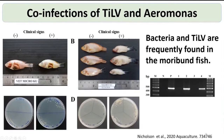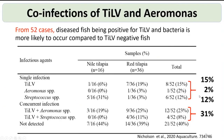From different farms, sick fish looked very pale, stopped eating, appeared lethargic, and had reddened faces due to infections. We found many bacterial colonies on the agar and they were also positive for the virus. When dividing cases, single infections accounted for about 39%, while co-infections were nearly equal at about 31%, most commonly Aeromonas and Streptococcus.